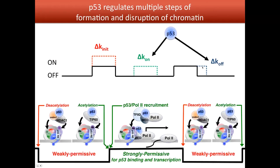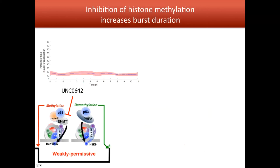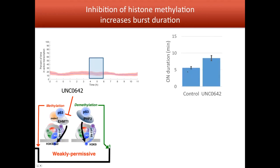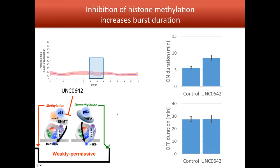Going back to our hypothesis: we assumed that methylation and acetylation could be linked to the duration of bursts. If we use a drug such as UNC0642, which is a methylation inhibitor, we expect burst duration to be longer — because inhibiting methylation should make it harder to transition from the on state to the off state. As expected, the on duration increased from five minutes to eight minutes with this drug, and very interestingly the off duration did not change at all.